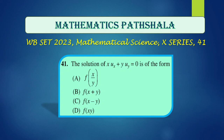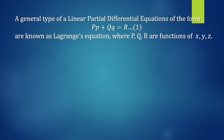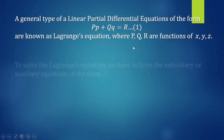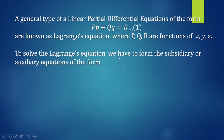The first problem is from Question Booklet Series X, Question No. 41. The problem is to find out the form of the solution of the given PDE: XUx plus YUy equals 0. We know a general type of linear partial differential equation of this form where P is dZ/dx and Q is dZ/dy, known as Lagrange's equation, where P, Q, and R are functions of x, y, and z. To solve this Lagrange's equation, we have to form the subsidiary or auxiliary equations.